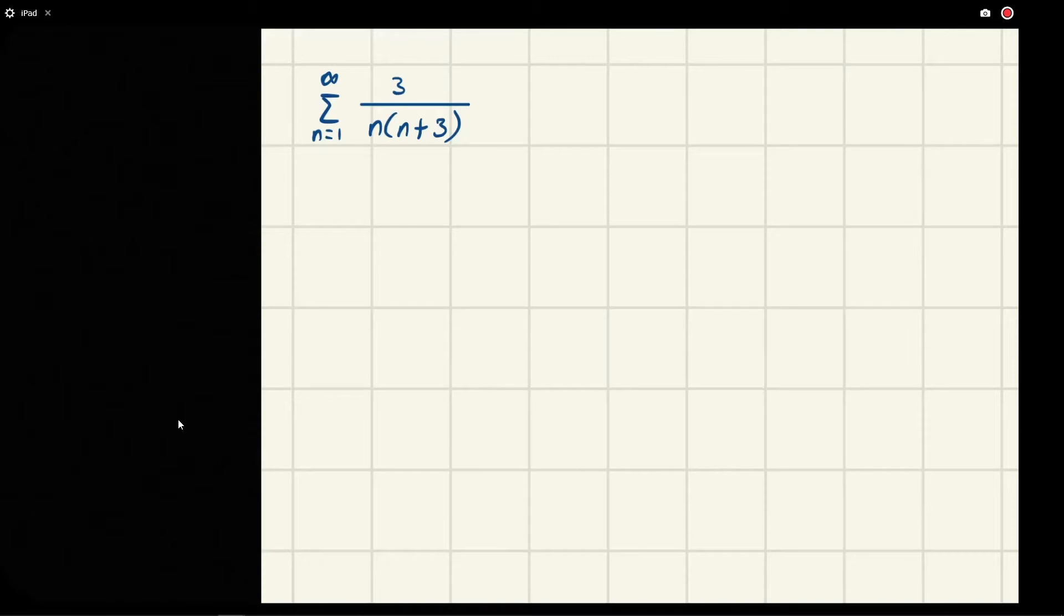And they want us to use a telescoping sum to do this. So you may have seen an example like this already. Pretty standard procedure for something like this is to immediately split the denominators and go for a partial fraction approach.